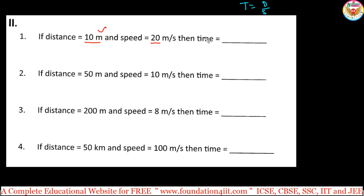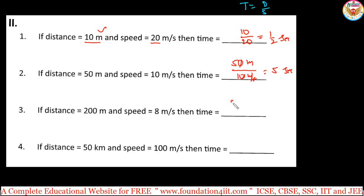Next: distance is 15 meters and speed is 5 meters per second — time equals 15 divided by 5, which is 3 seconds. Then, distance is 200 meters and speed is 8 meters per second — 200 divided by 8. Using cancellation: 8 goes into 200 as 25 times, so the answer is 25 seconds.